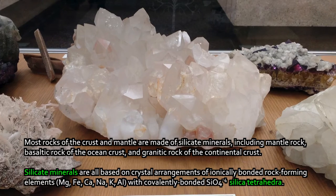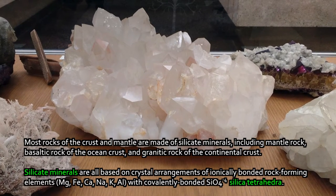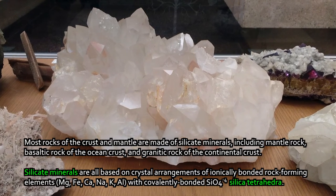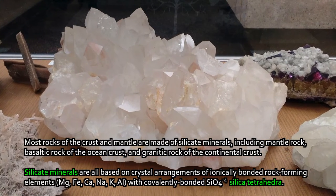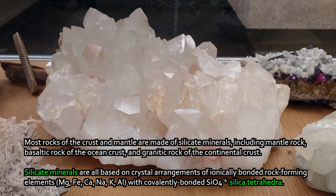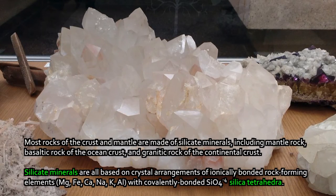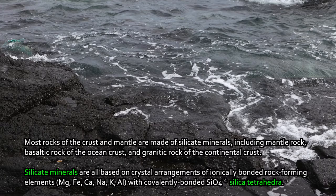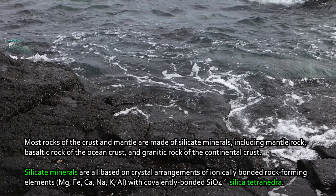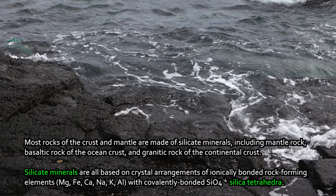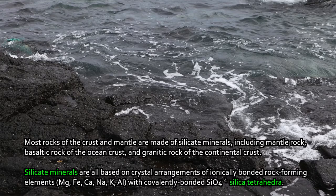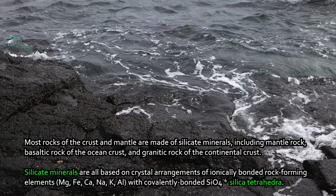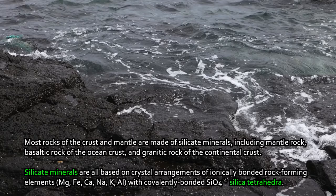It's all based upon their structure. I talked in a previous lecture about ionic bonding, covalent bonding, and metallic bonding in minerals. Most of the rocks of the crust and mantle are silicate minerals that are mostly ionic to a small amount of covalent bonded in their lattice arrangements. Mantle rock peridotite, basaltic rock of the ocean crust, granitic rock of the continental crust — these are all primarily silicates. There are also oxide minerals and sulfides and others, which I'll talk about in separate lectures, but for the most part we're talking about silicates.